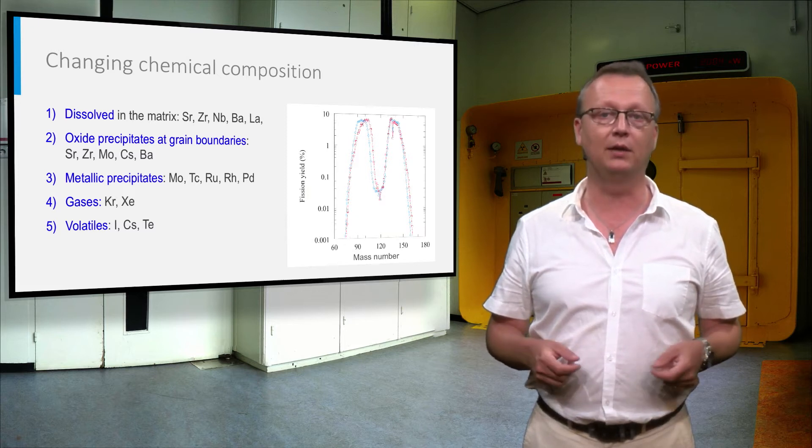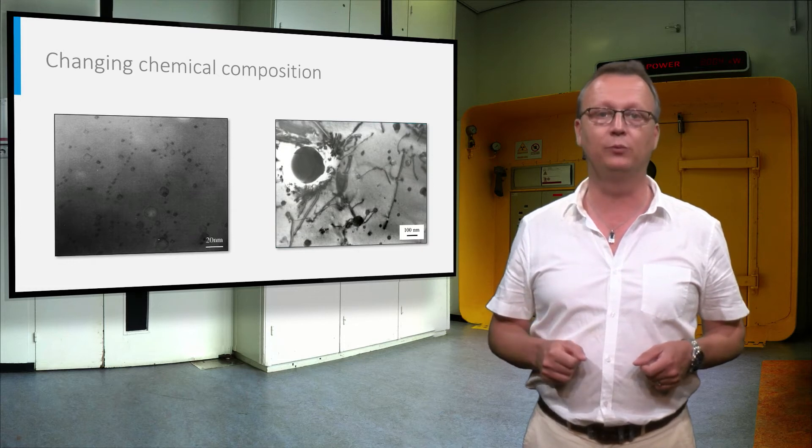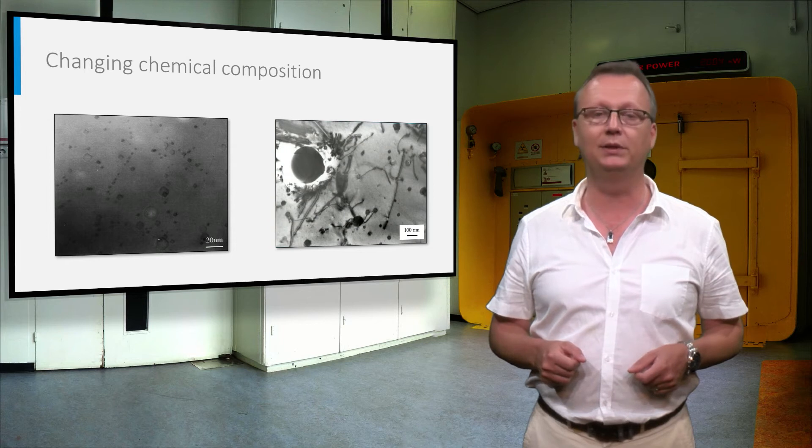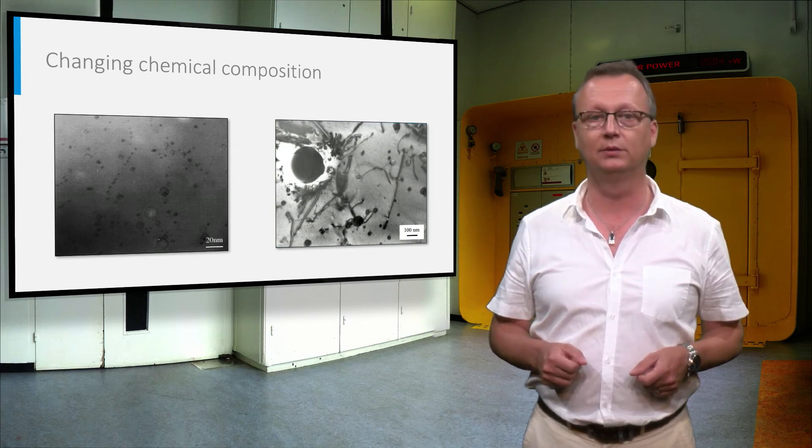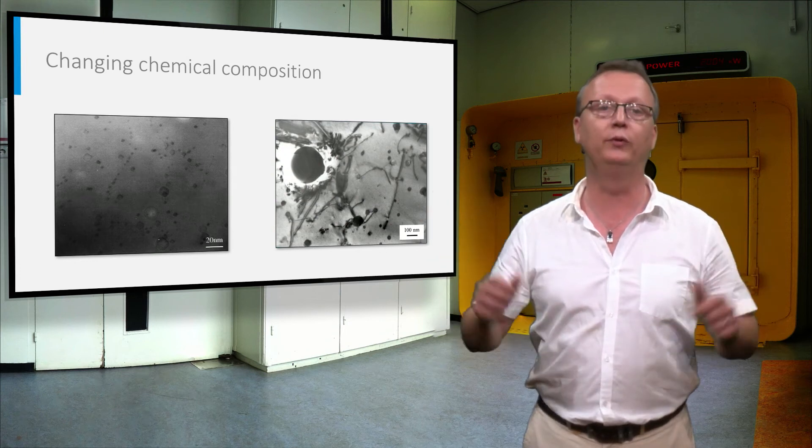These secondary phases can be observed by electron microscopy analysis, the gas bubbles with noble gases xenon and krypton and spherical metallic precipitates containing noble metals. These new phases also contribute to the expansion of the fuel pellets.